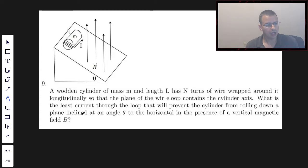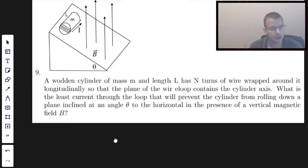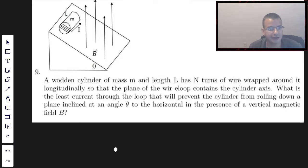What is the least current through the loop that will prevent the cylinder from rolling down a plane inclined at an angle theta to the horizontal in the presence of a vertical magnetic field?